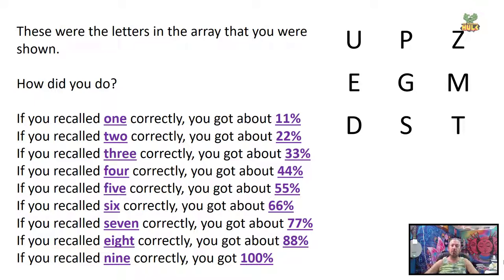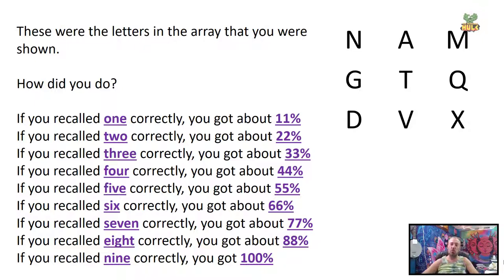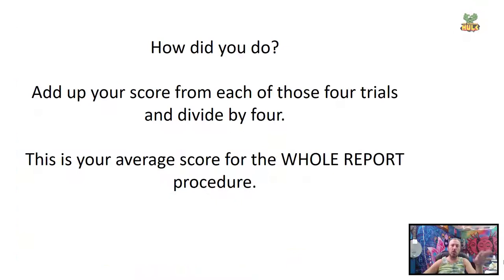Trial four. One more. Write them all down. Again, how'd you do? Score it. Write down all four of these now. You should have four different percentages for trials one, two, three, and four. Get an average. Add those four together, divide by the number four, write down that average percentage. This is how well you did for the whole report procedure.